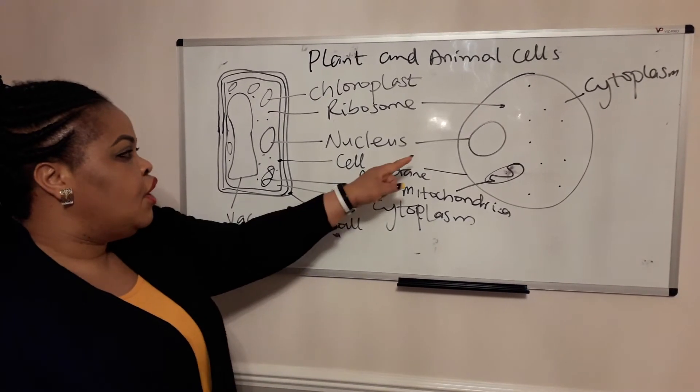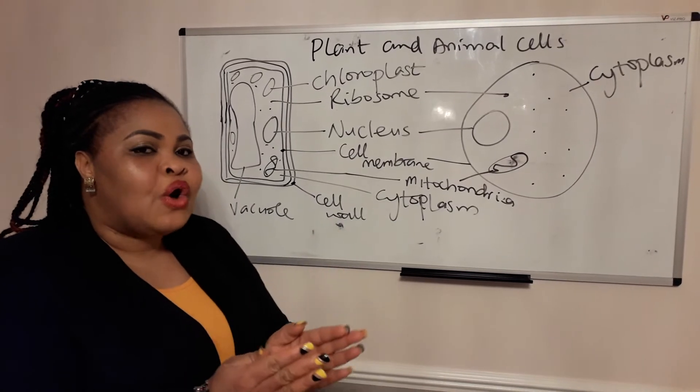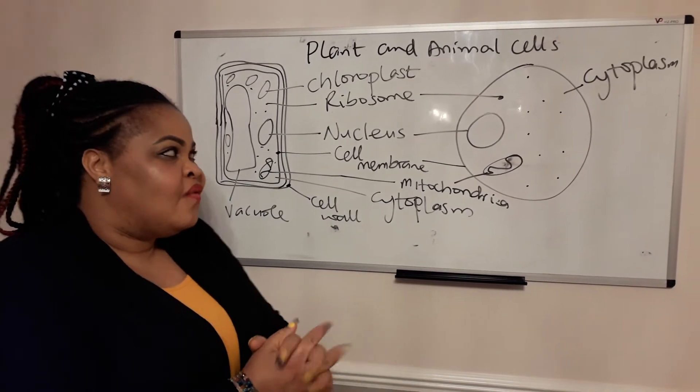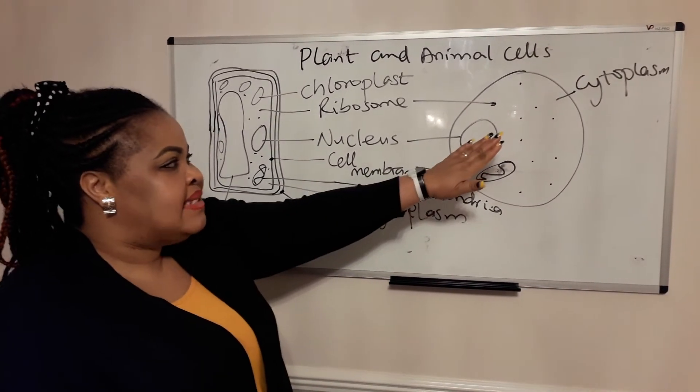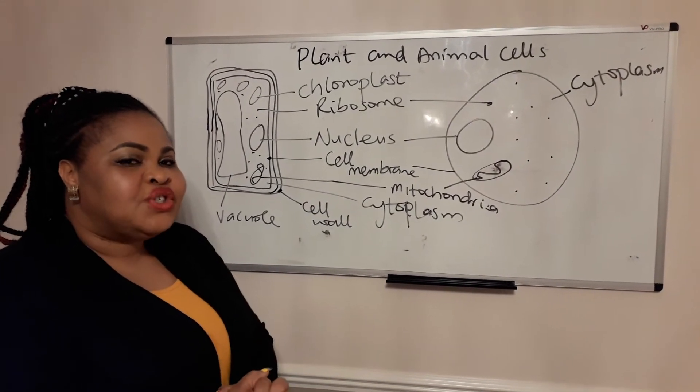Quickly, the nucleus holds the DNA. The cell membrane controls what goes in and out of the cell. The cytoplasm is a jelly-like material where all the chemical reactions happen.